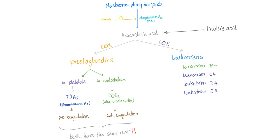Let's go to the prostaglandins — it depends on the tissue type. If you are in the platelets, let's form thromboxane A2, which is pro-coagulation. However, if you are in the endothelium, let's form prostaglandin I2, also known as prostacyclin. Prostacyclin is anti-coagulation. Both thromboxane A2 and prostacyclin have the same root — both the pro-coagulatory and anti-coagulatory mediators come from the same source, which is an ingenious method.